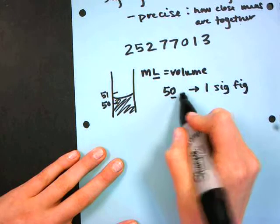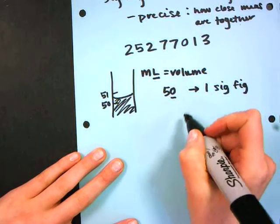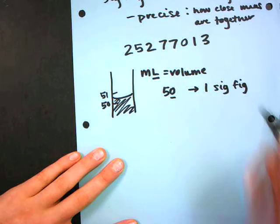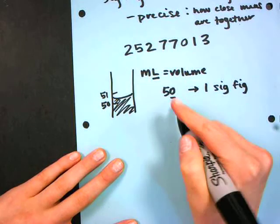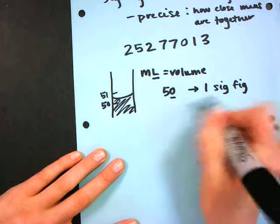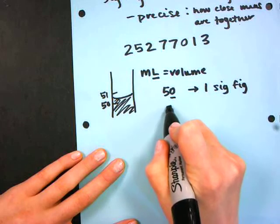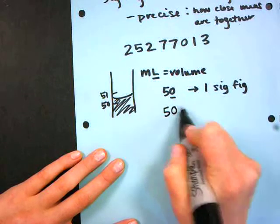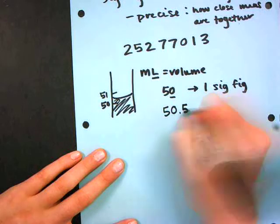And there's nothing behind it that suggests that I was more precise with my measurement. And so because there's nothing that says oh yeah she was more precise, this is just going to be one sig fig. Now let's say that I get a little bit better about my measurement and I say I have 50.5.